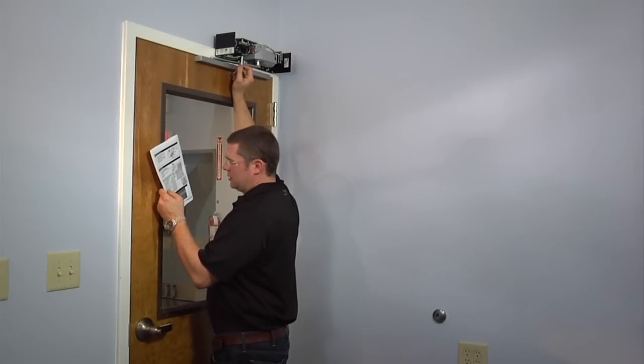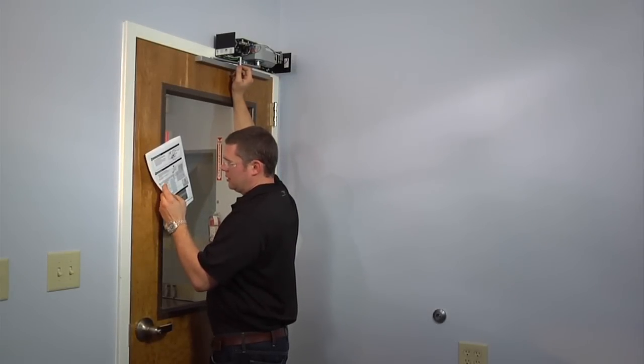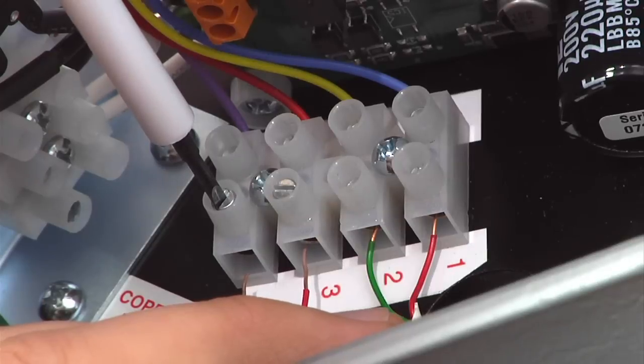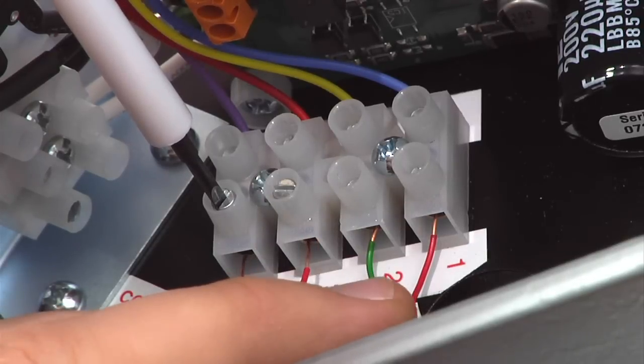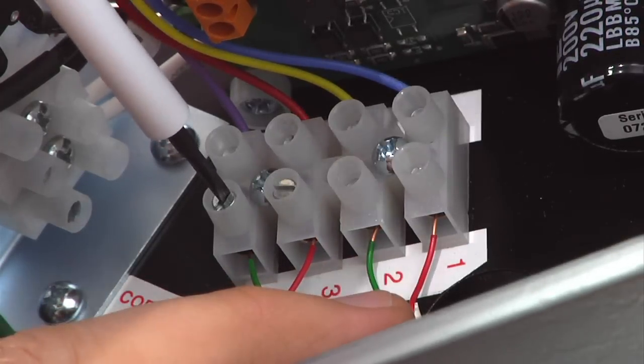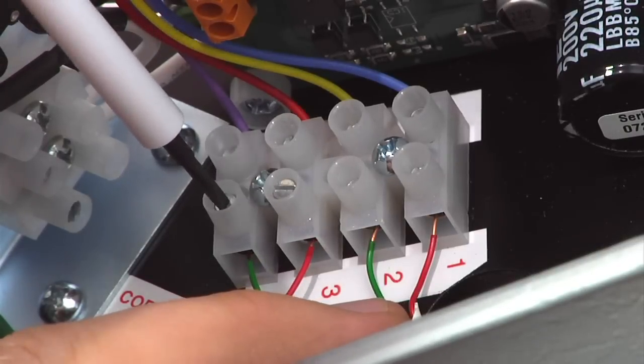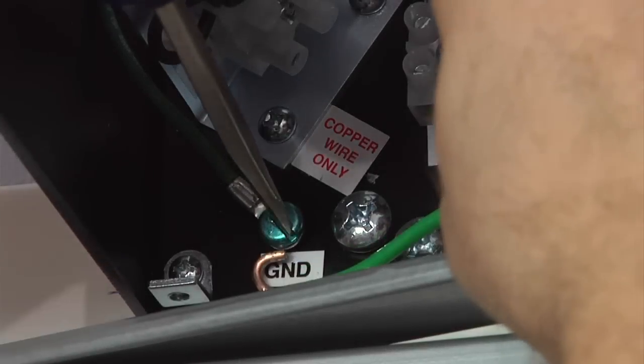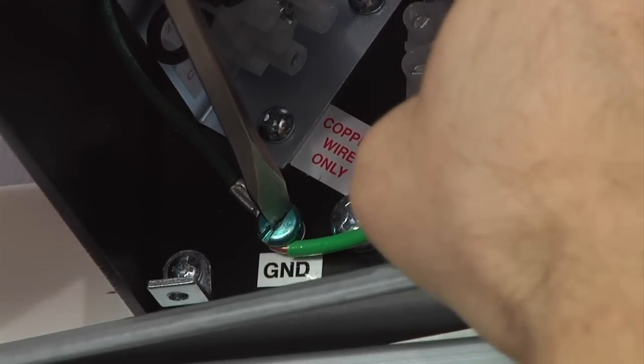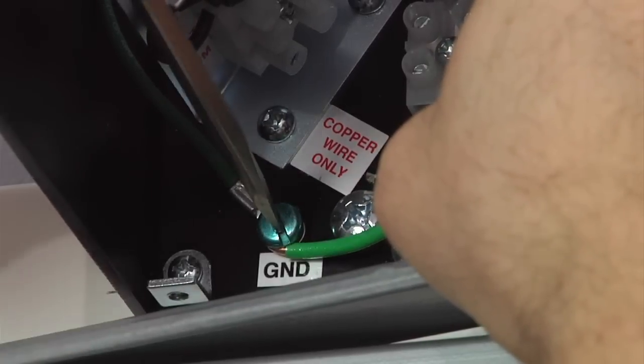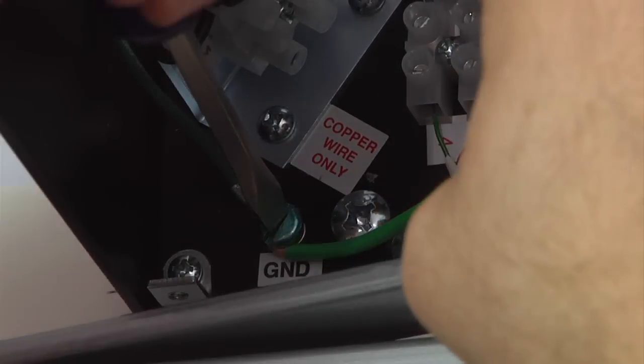At this point, it will be necessary to refer to the chart in the manual to determine the positions for the incoming control wires. Once you've decided on the wiring choice that suits your needs, simply insert the bare end of the wire into the appropriate block and tighten the screw. Make sure to use the green grounding screw directly below the activation connection block to ground the operator. This is essential for proper operation.